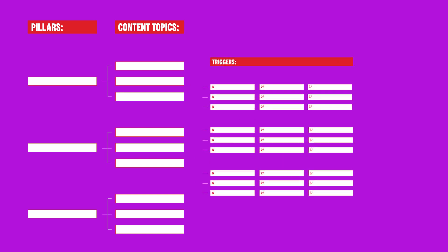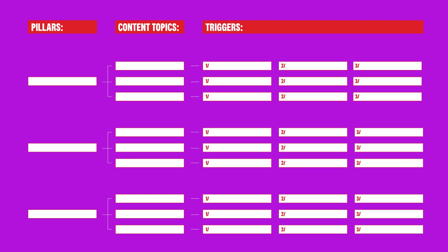We're going to showcase an example of a framework that can help you create large amounts of content quicker and easier while still keeping everything on message. This framework has three levels: content pillars, content topics, and content triggers. Let's have a look at each one in detail.